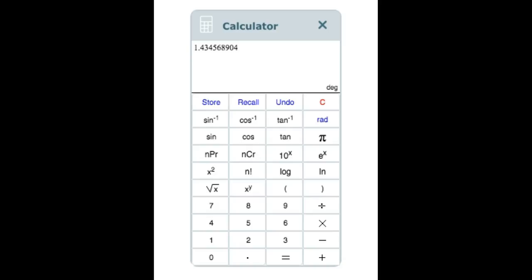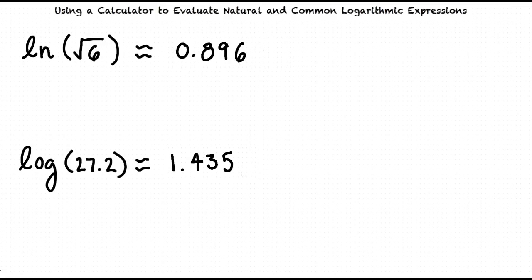Next, we round it to the nearest thousandth, giving us the final answer of log of 27.2 equals 1.435. Excellent work!